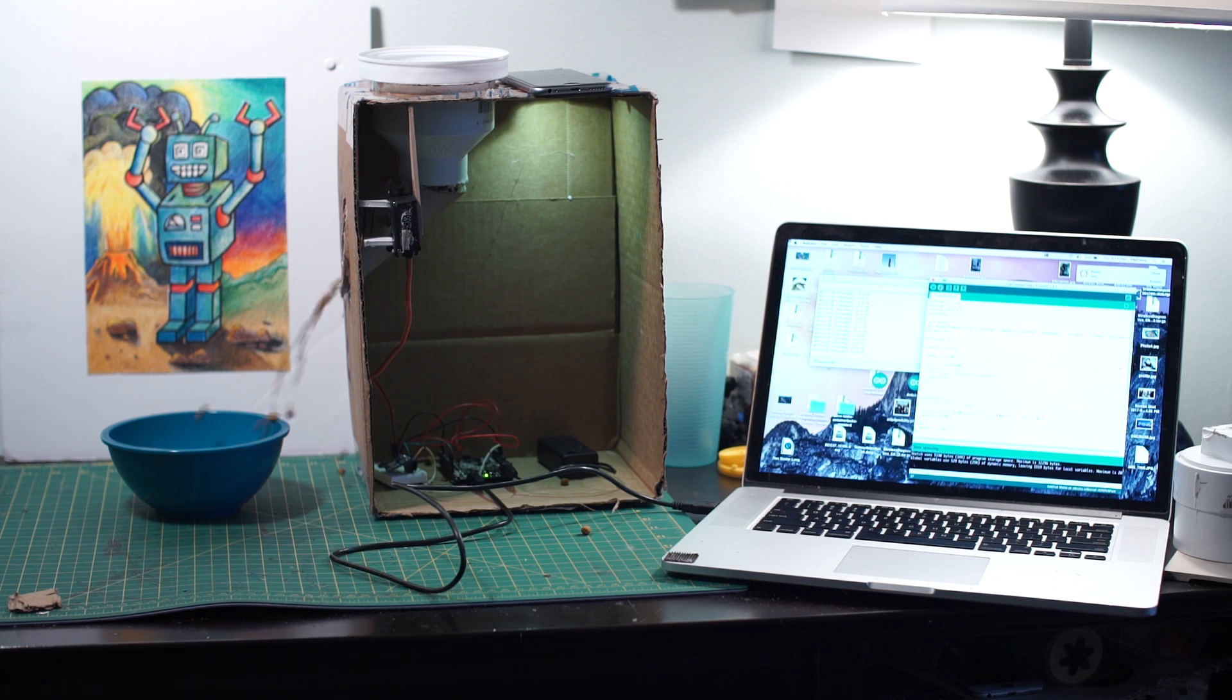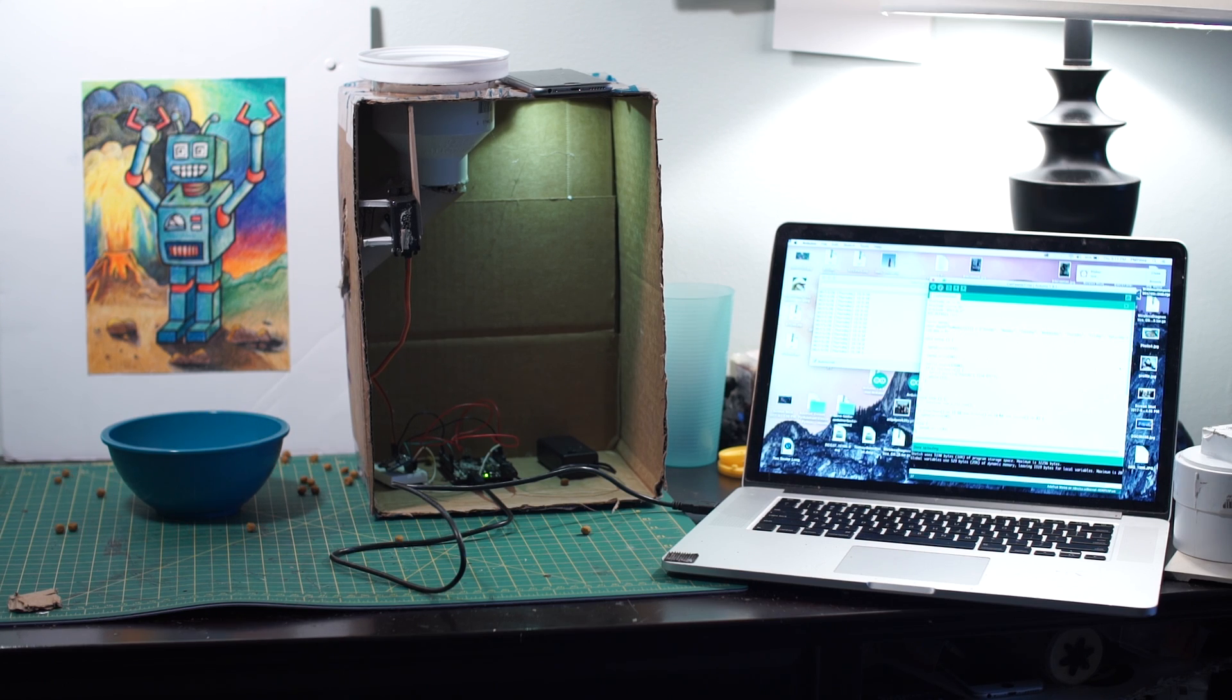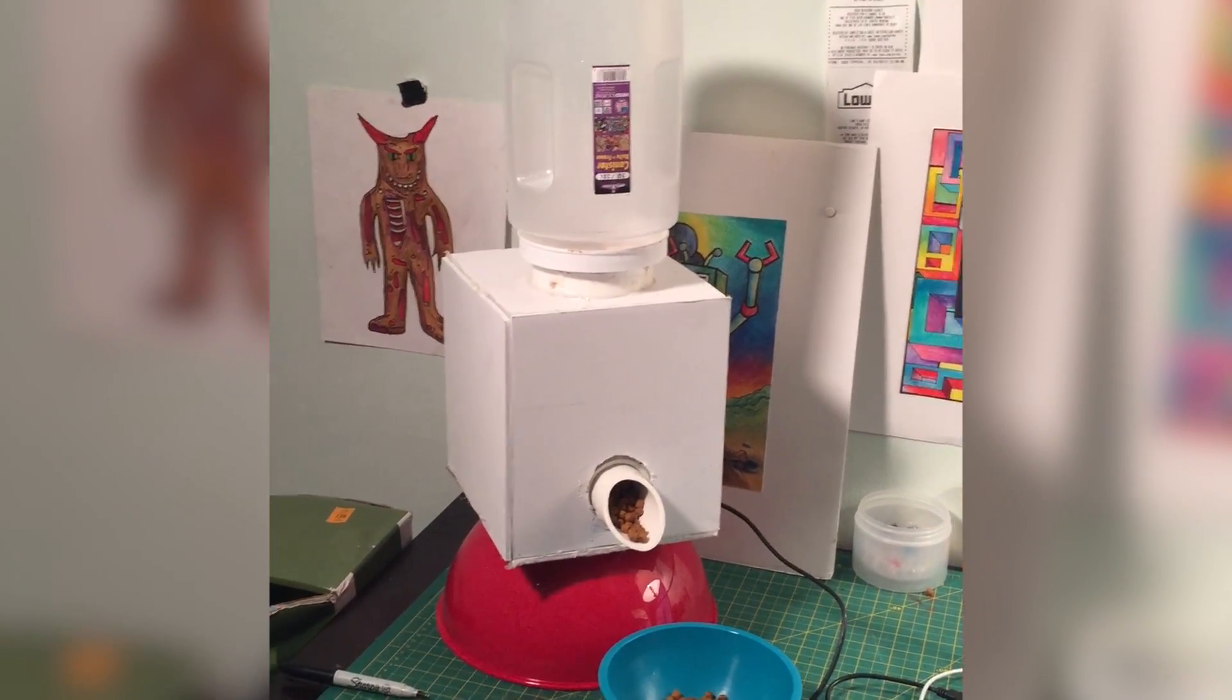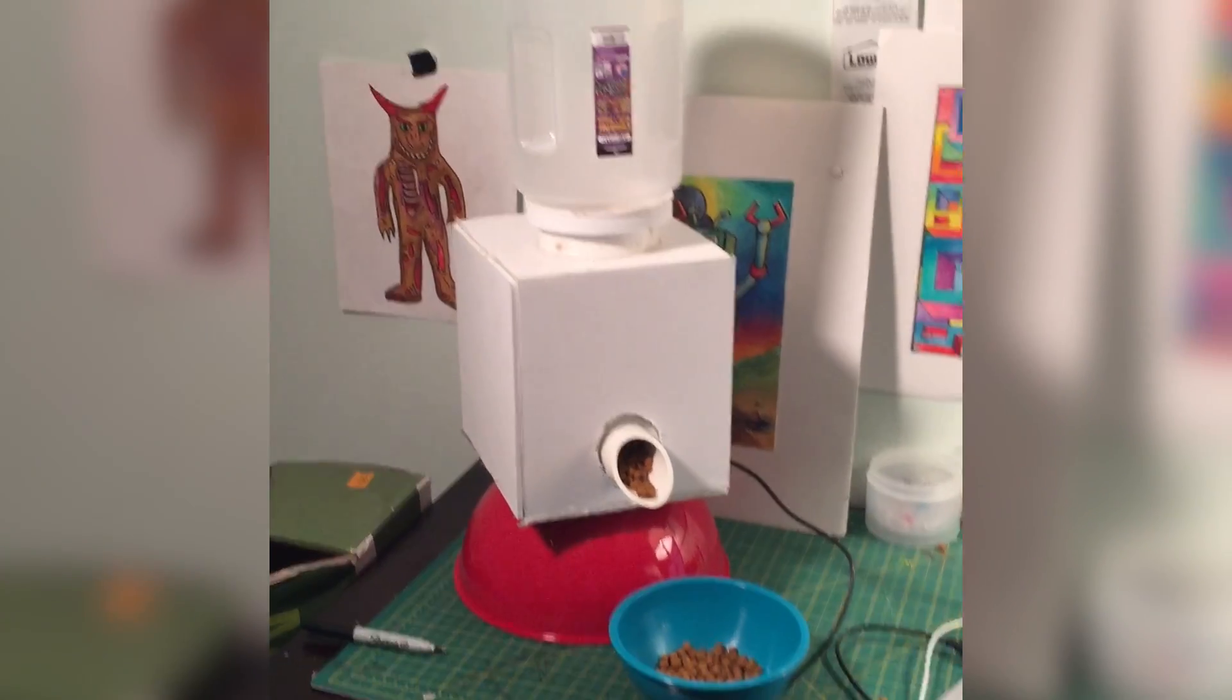Then I built another prototype using PVC and foam core. This was my first failure as I used a 90 degree angle instead of a 45 and the food didn't have enough momentum to make it out of the pipe. The solution was to get bigger PVC pipes.